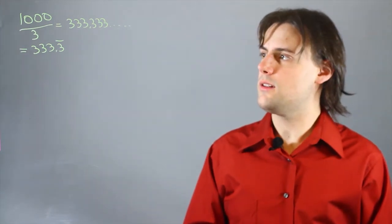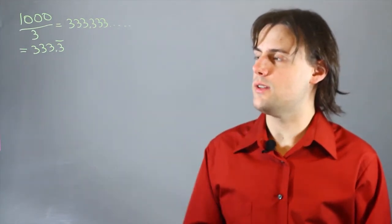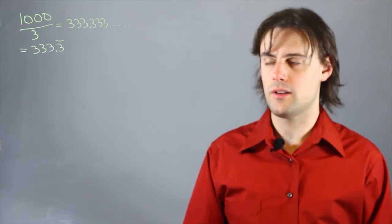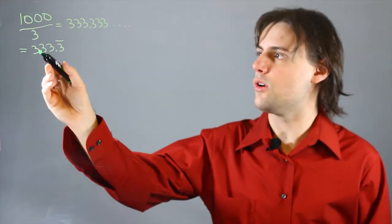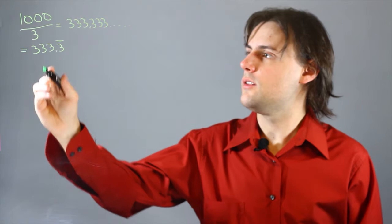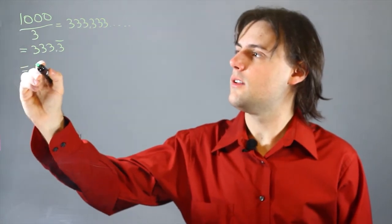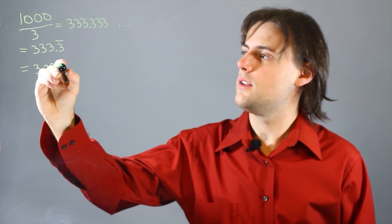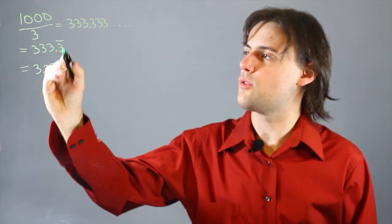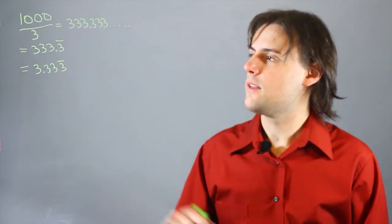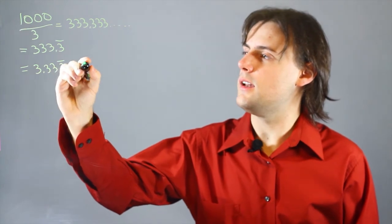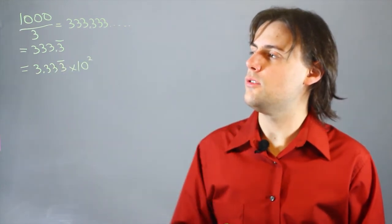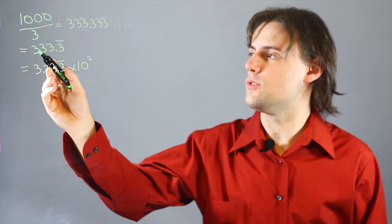We can rewrite this number in scientific notation by first considering the fact that we're in the hundreds place. So we write 3.33, and I'll just keep that 3 with the repetend bar, times 10 to the power 2, because we're in the hundreds place now.